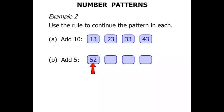So we know the first number is 52. So 52 plus 5 is 57. 57 plus 5 is 62. 62 plus 5 is 67.